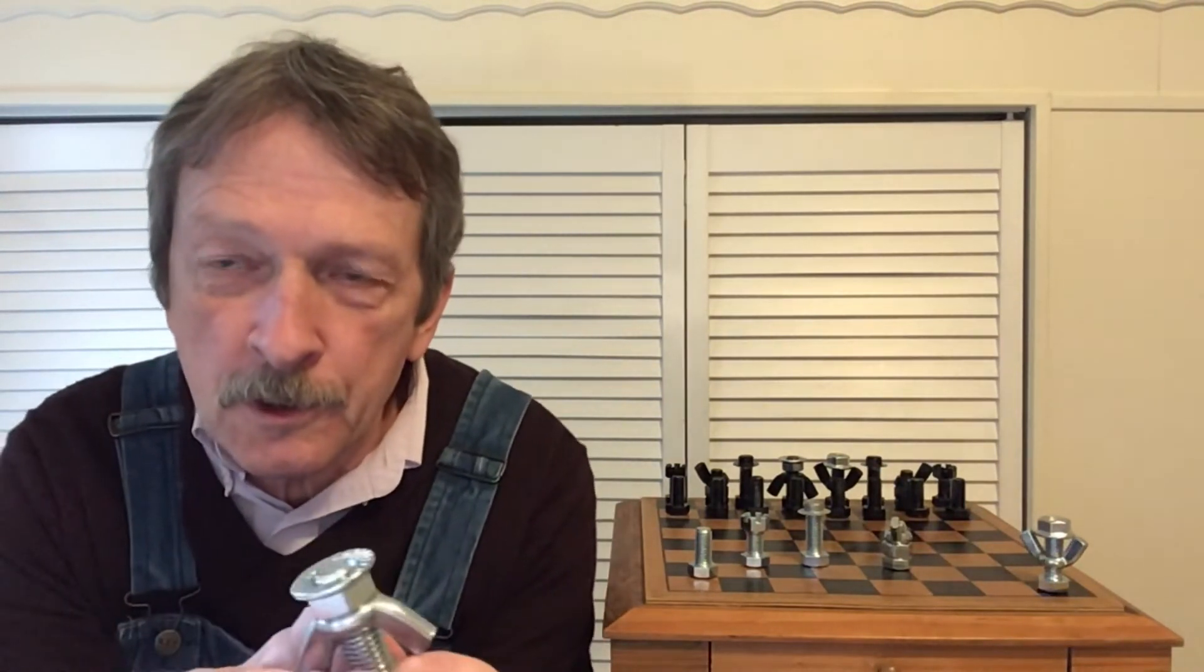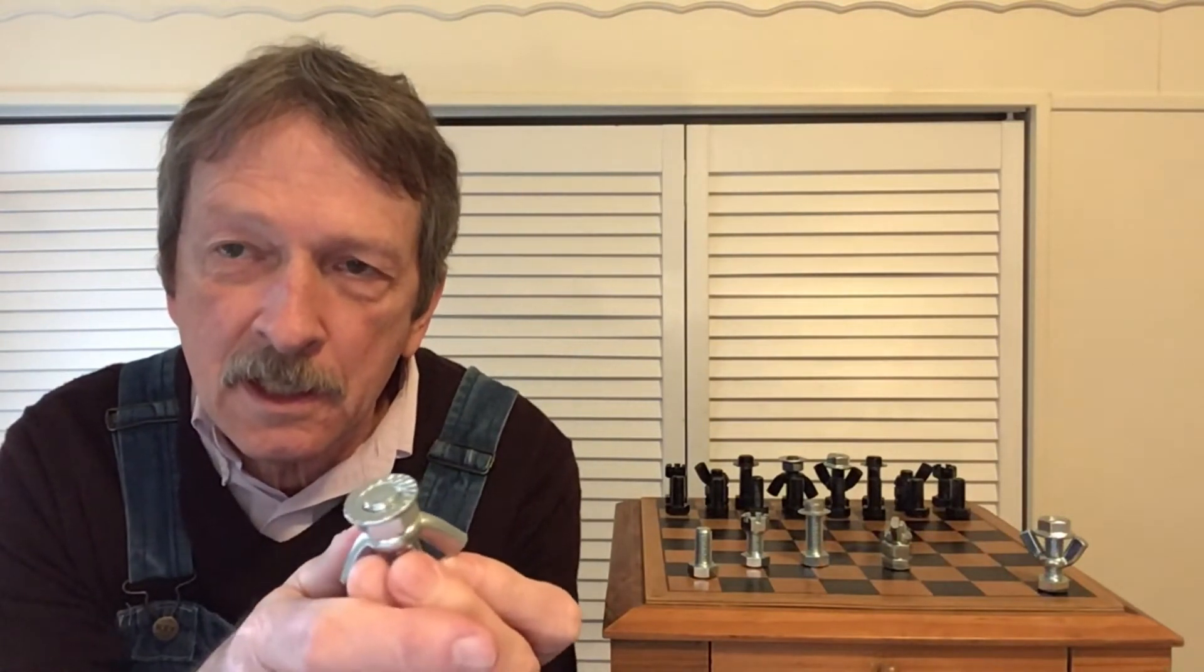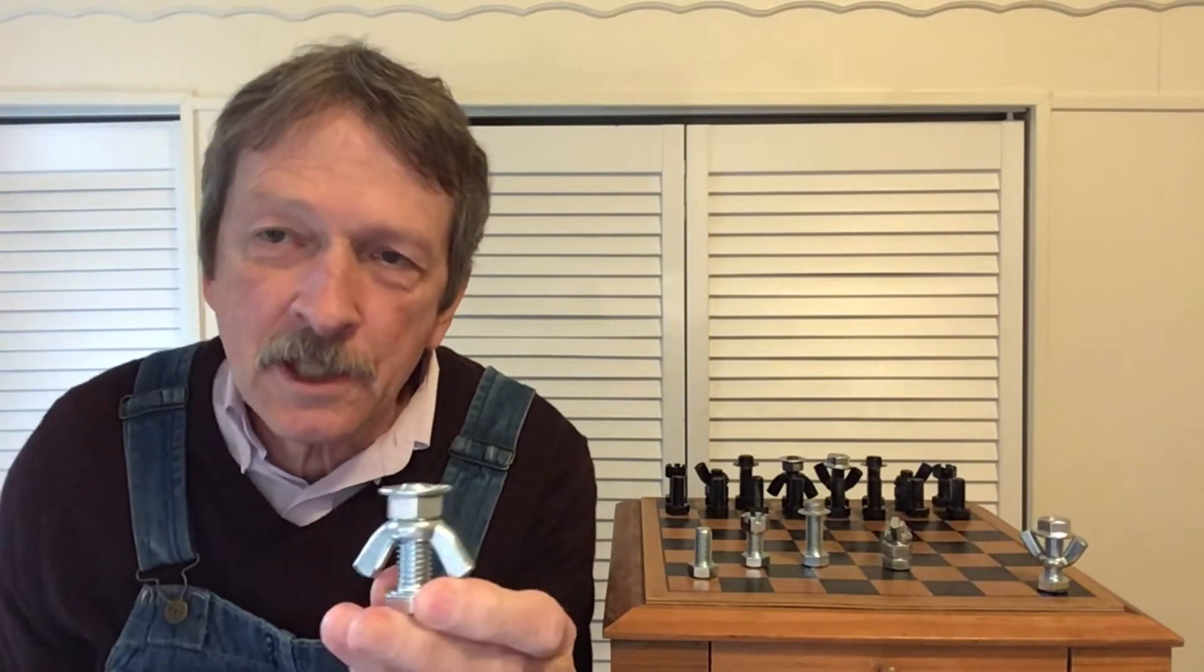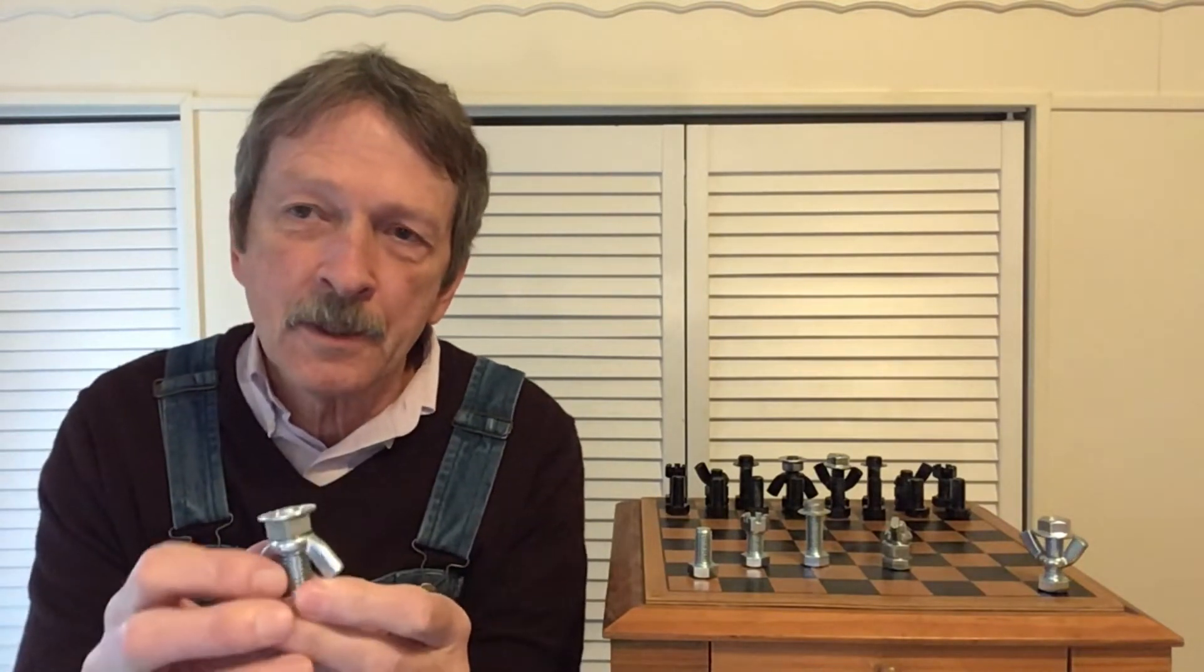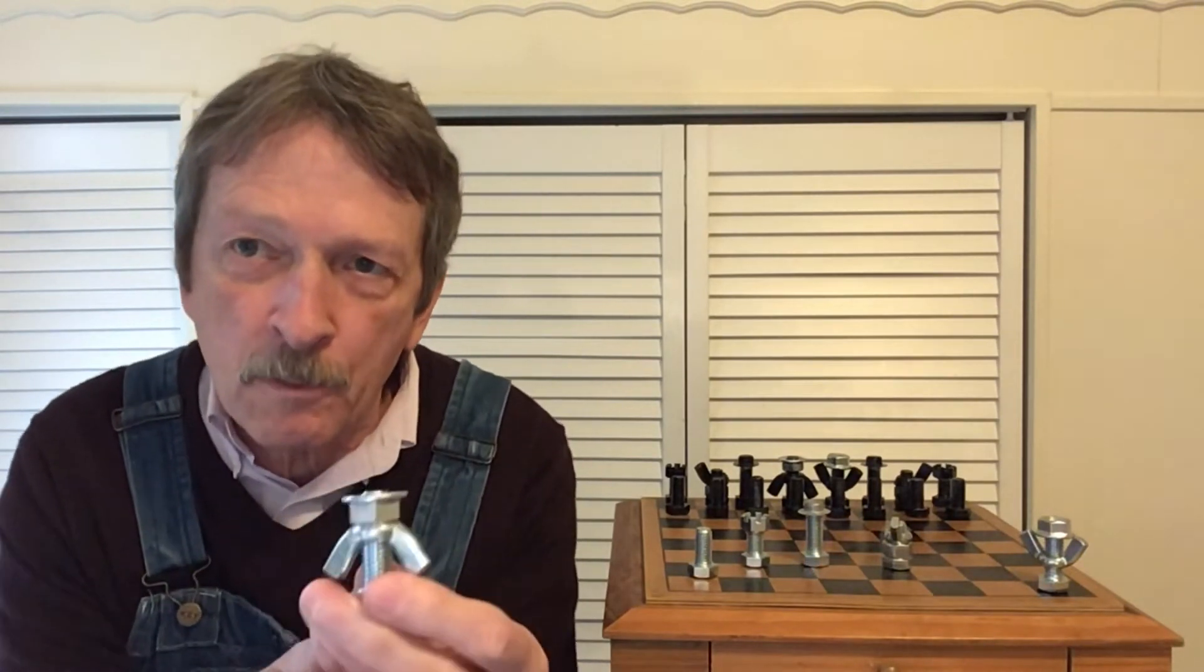So there she is. And I used for her head and crown a locking hex nut. See that there? A locking hex nut. It's a beautiful crown I think. And then she's got a full wing nut turned upside down. And those represent her arms.